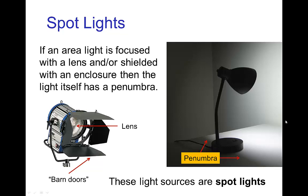Now finally, one of the more important types of light sources used in cinematography are spotlights. And this is sort of an area light that has a focus using a lens and also shielding from an enclosure. Now in this case, the light source itself has a penumbra because of the use of the lens and of the barn doors enclosure.